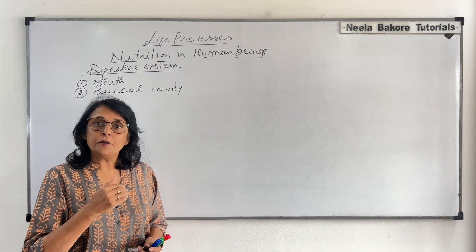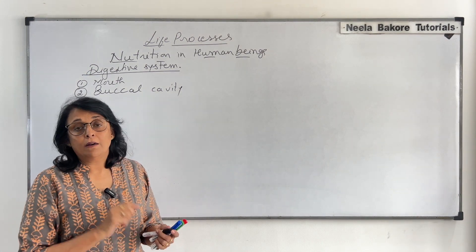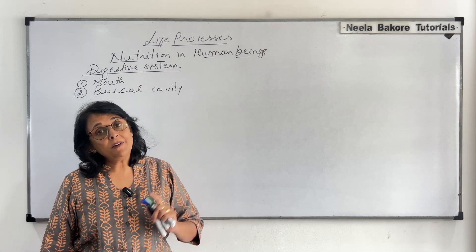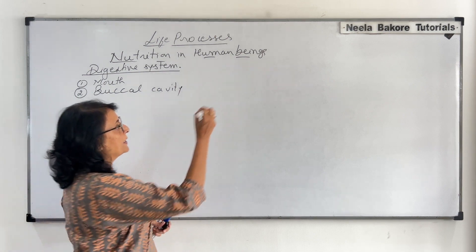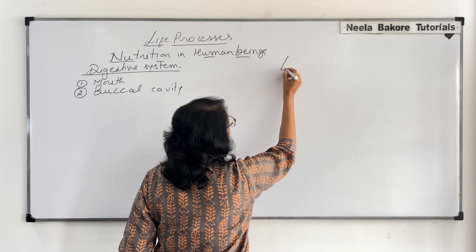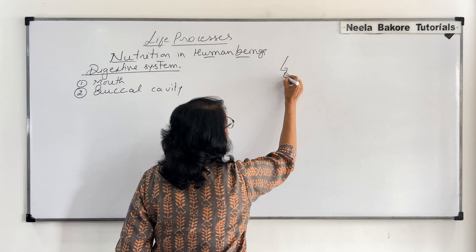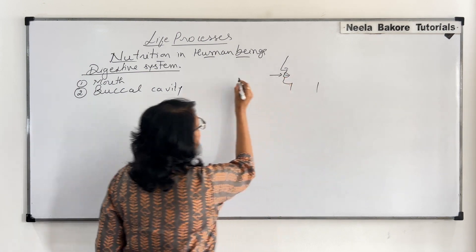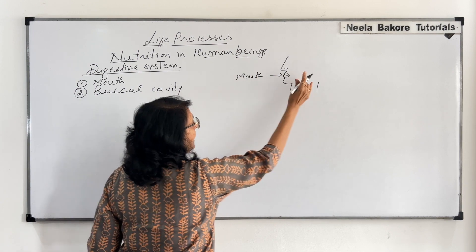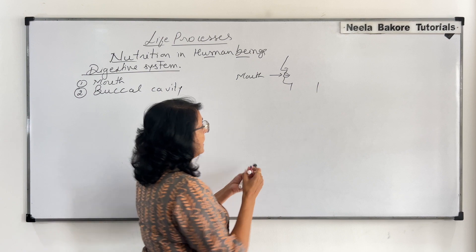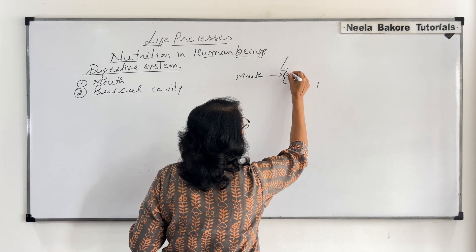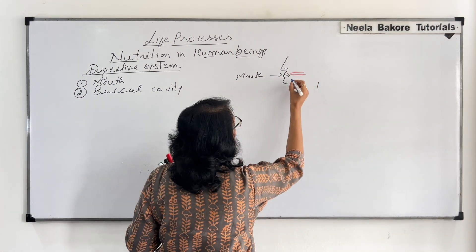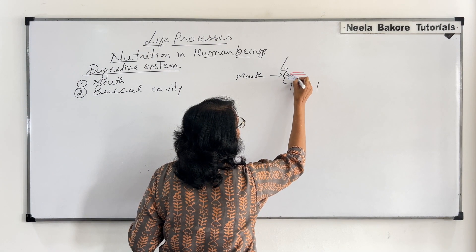We will keep drawing different parts and writing down the names. Once we understand all the parts, we will take up the functions of each and every part. We are drawing a simple face to understand the location of different things. Here is the mouth opening, the buccal cavity with the tongue, and then there are teeth in the jaw, with different types of teeth.